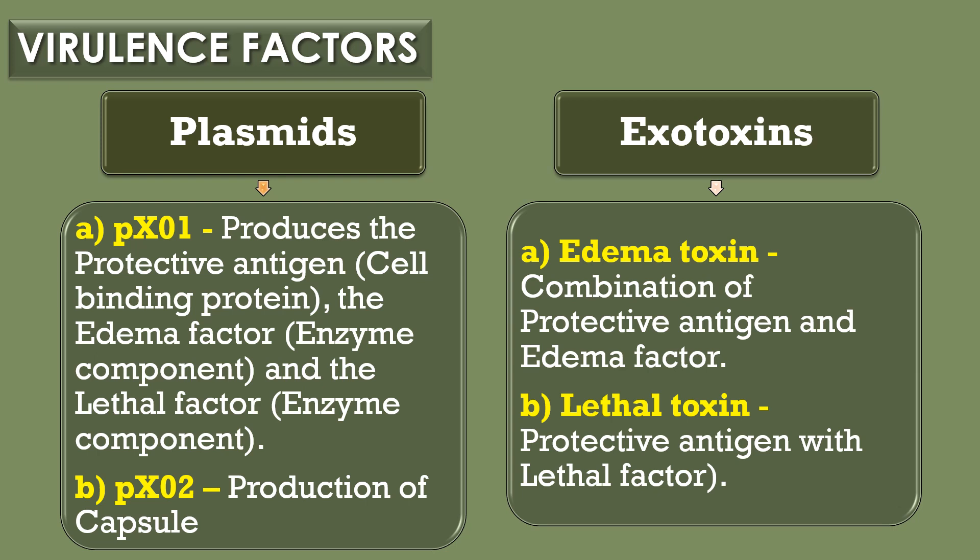Virulence factors are the factors responsible for causing infection in human beings. Bacillus anthracis produces two virulence factors for causing anthrax infection: plasmids and exotoxins.